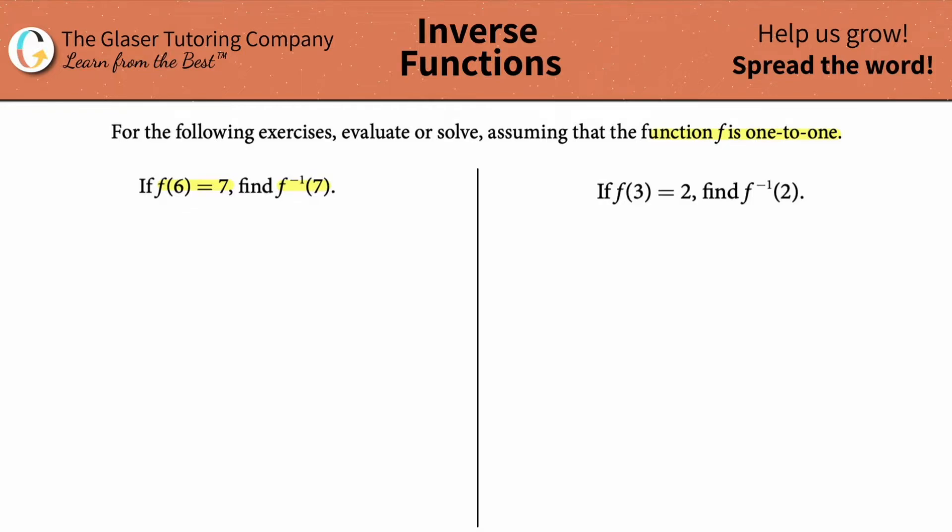Your basic function notation looks like this: f of x is equal to y. In English, this is going to say if we know the x value, then we can always find the y value, or if we know the y value, we can always find the x value.